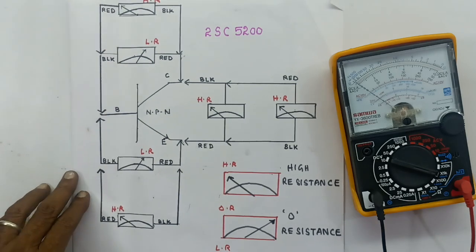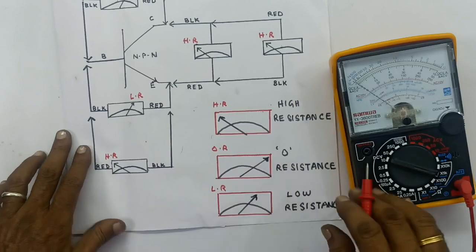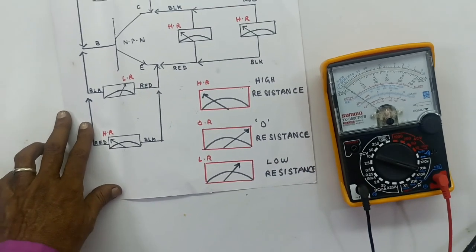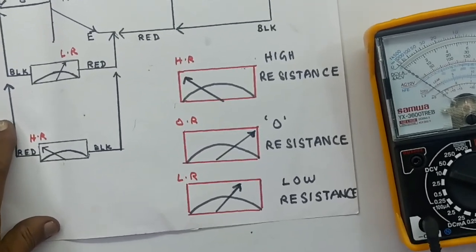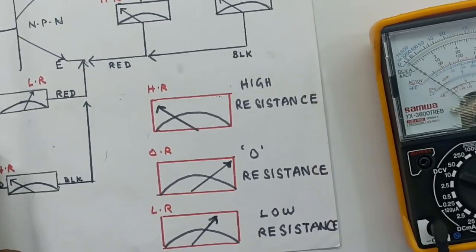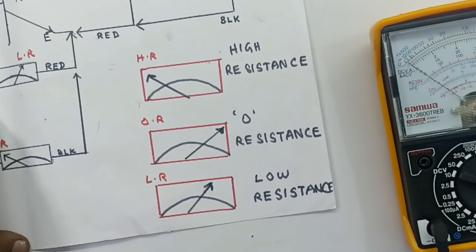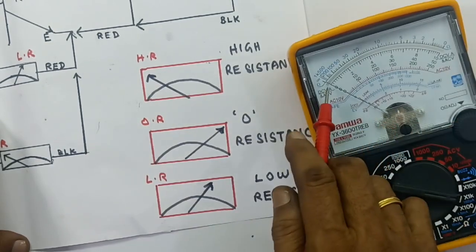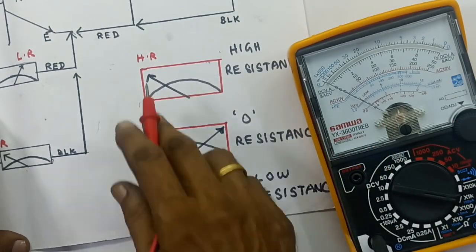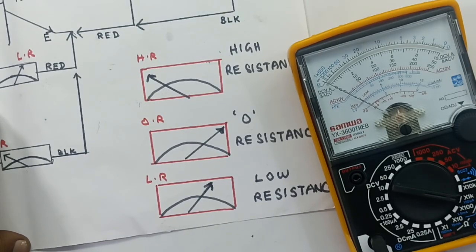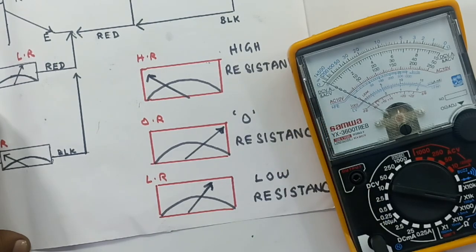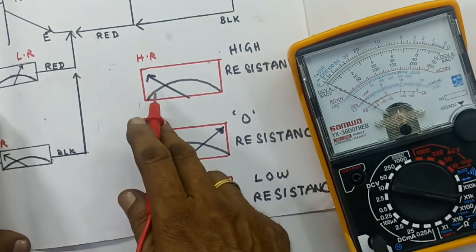Now, what do we want to check with the analog multimeter — how do you check this power transistor? This multimeter has a display in the middle. The middle position represents high resistance. The extreme right position is zero resistance with no resistance.